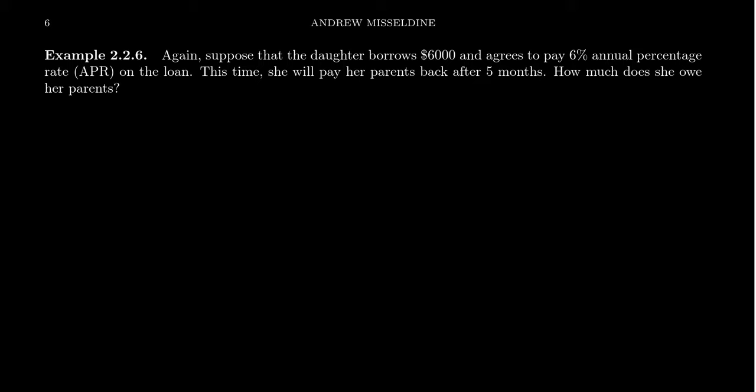Let's switch up the situation again. Suppose that the daughter borrows 6,000 and she has an APR of 6%, but she pays back her parents after a timeframe of five months. When you are working with months, there's a mismatch between months and percentage rate because the APR is an annual percentage rate. It's per year, but we're measuring time in months. So we have to convert from one to the other.